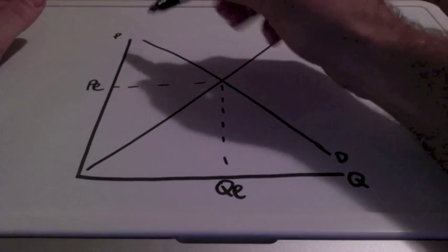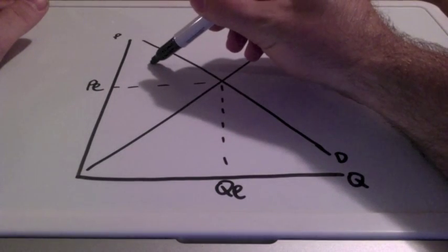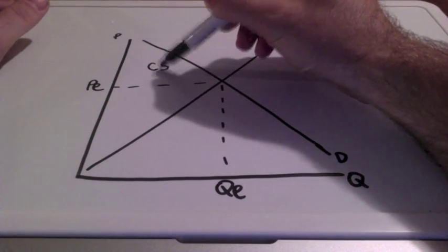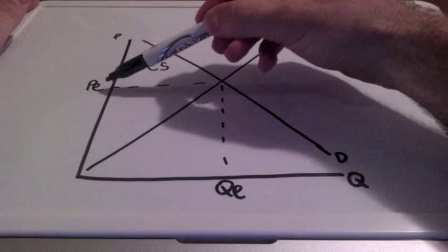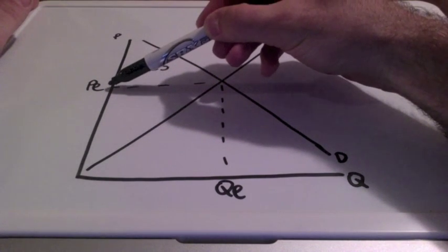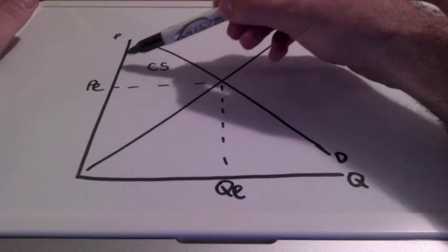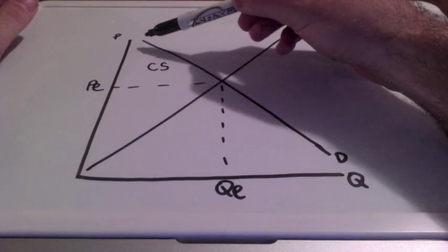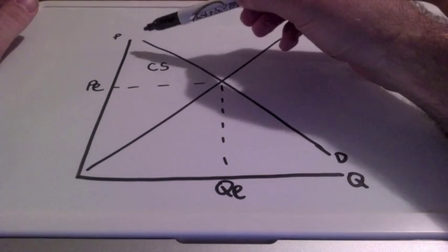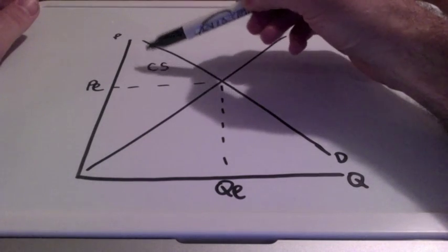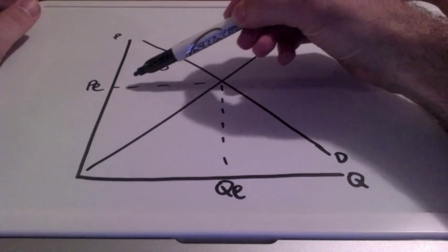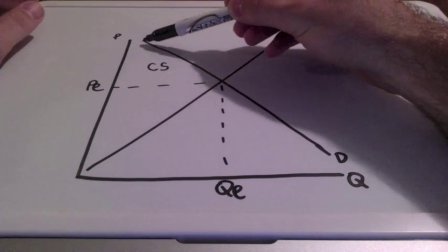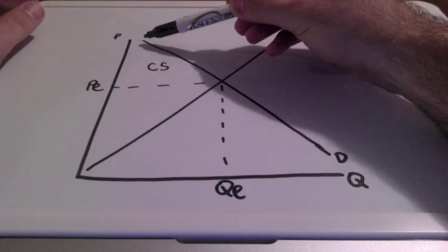When we examine where consumer surplus would be on our graph, it spans from the equilibrium price all the way up to our demand curve. Remember, the demand curve deals with consumers. Consumer surplus is the area from the equilibrium price all the way up to our demand curve.